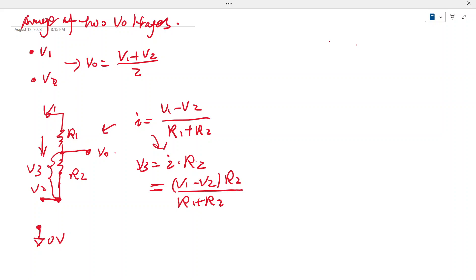Then what is the Vout? Vout here, Vout equals V2 plus V3. V2 is referenced here, and V3 is the voltage across R2. So Vout equals V2 plus V3.